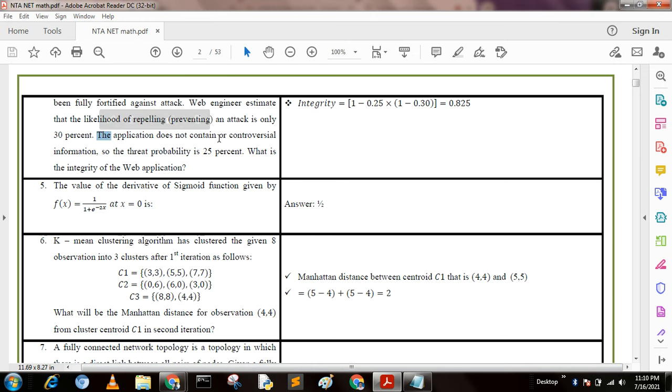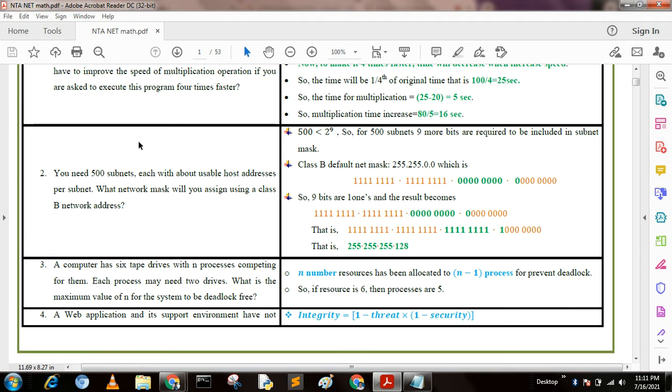The application does not contain controversial information, so the threat quality is 25 percent. What is the integrity of the operation? To do this math, we use the formula: integrity = 1 - threat × (1 - security).